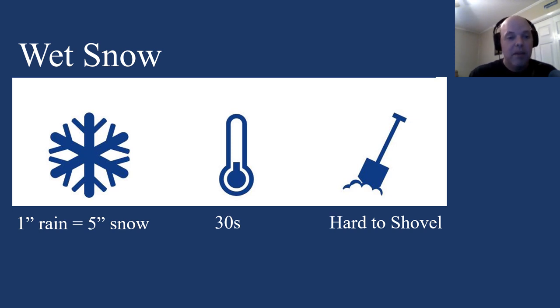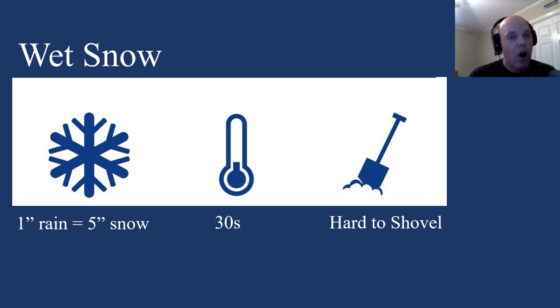In some instances, one inch of rain could equal five inches of snow. That's a very heavy, wet snow — it's very hard to shovel, which is why it's nicknamed heart attack snow.